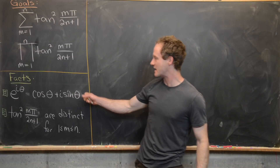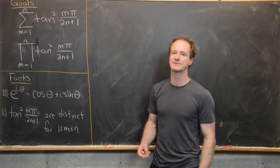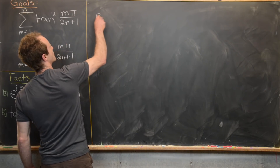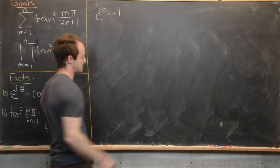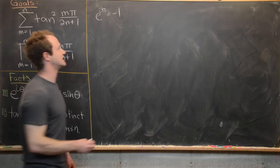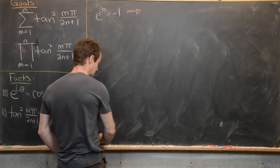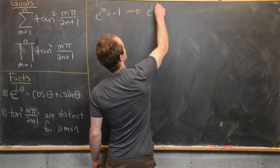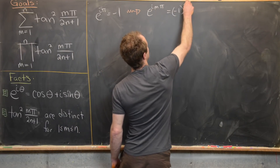We'll start our calculation by evaluating Euler's formula at the famous point theta equals pi, giving us e to the i pi equals negative 1. We then exponentiate both sides to the m power, where m is a positive integer, giving us e to the i m pi equals minus 1 to the m.